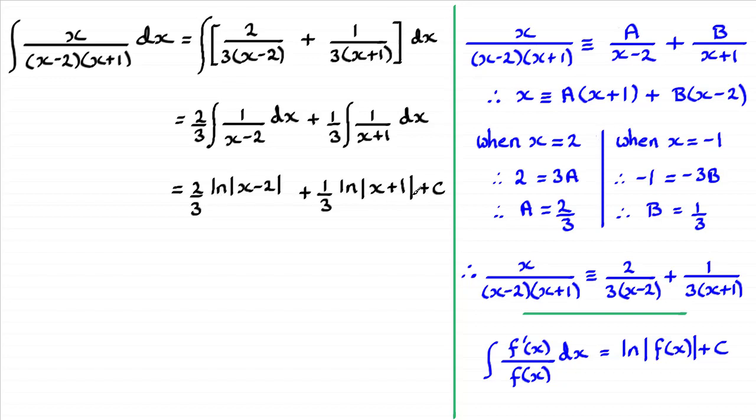Now, I could leave this answer like this, and it would be correct. But we might be asked to simplify it further. And so what I can do is pull out, say, a third as a common factor. So if I was to pull out 1/3 as a common factor between those two terms, we're going to get this result here.